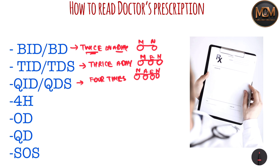In terms of time intervals: twice a day means every 12 hours, thrice a day means every 8 hours, and four times a day means every 6 hours.